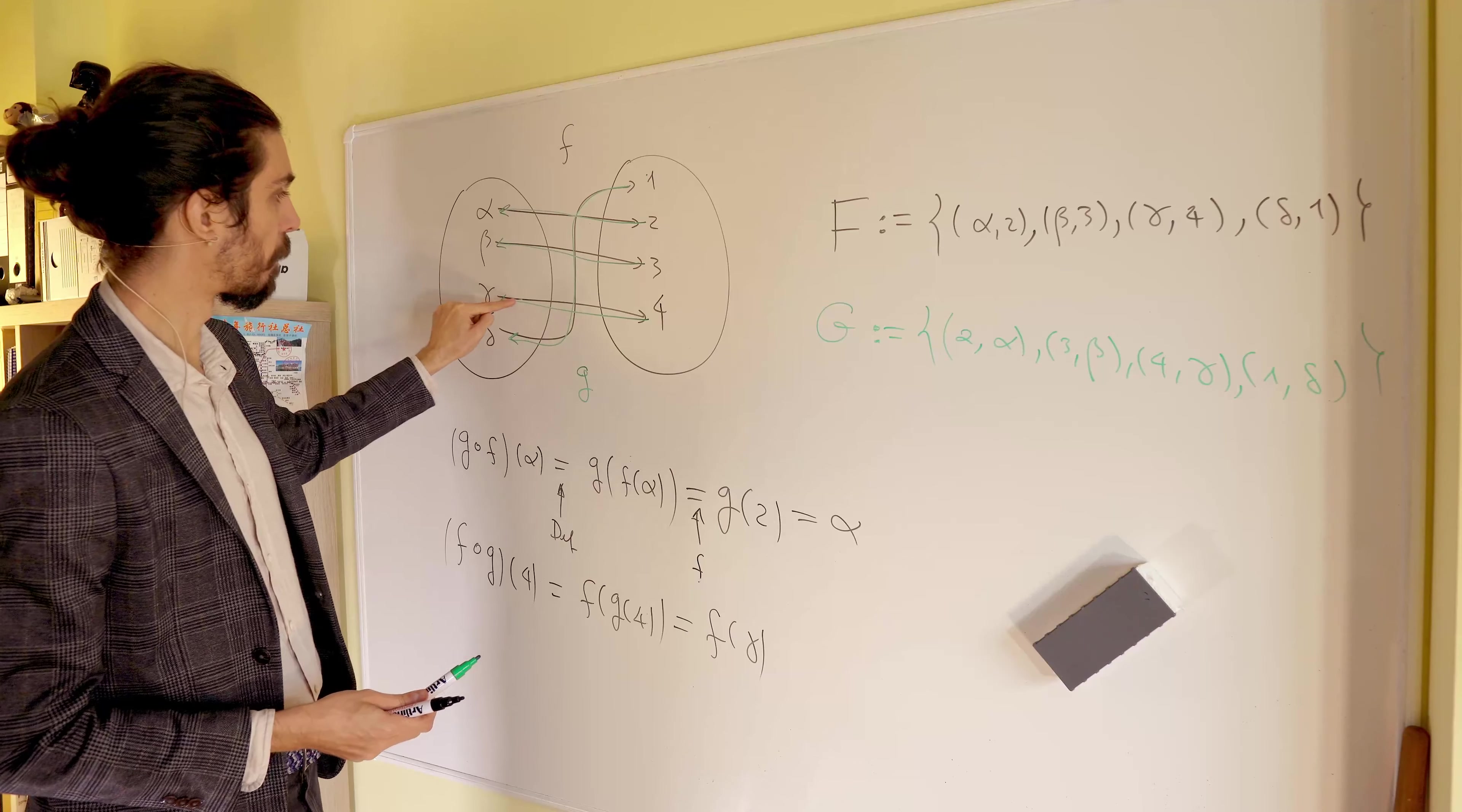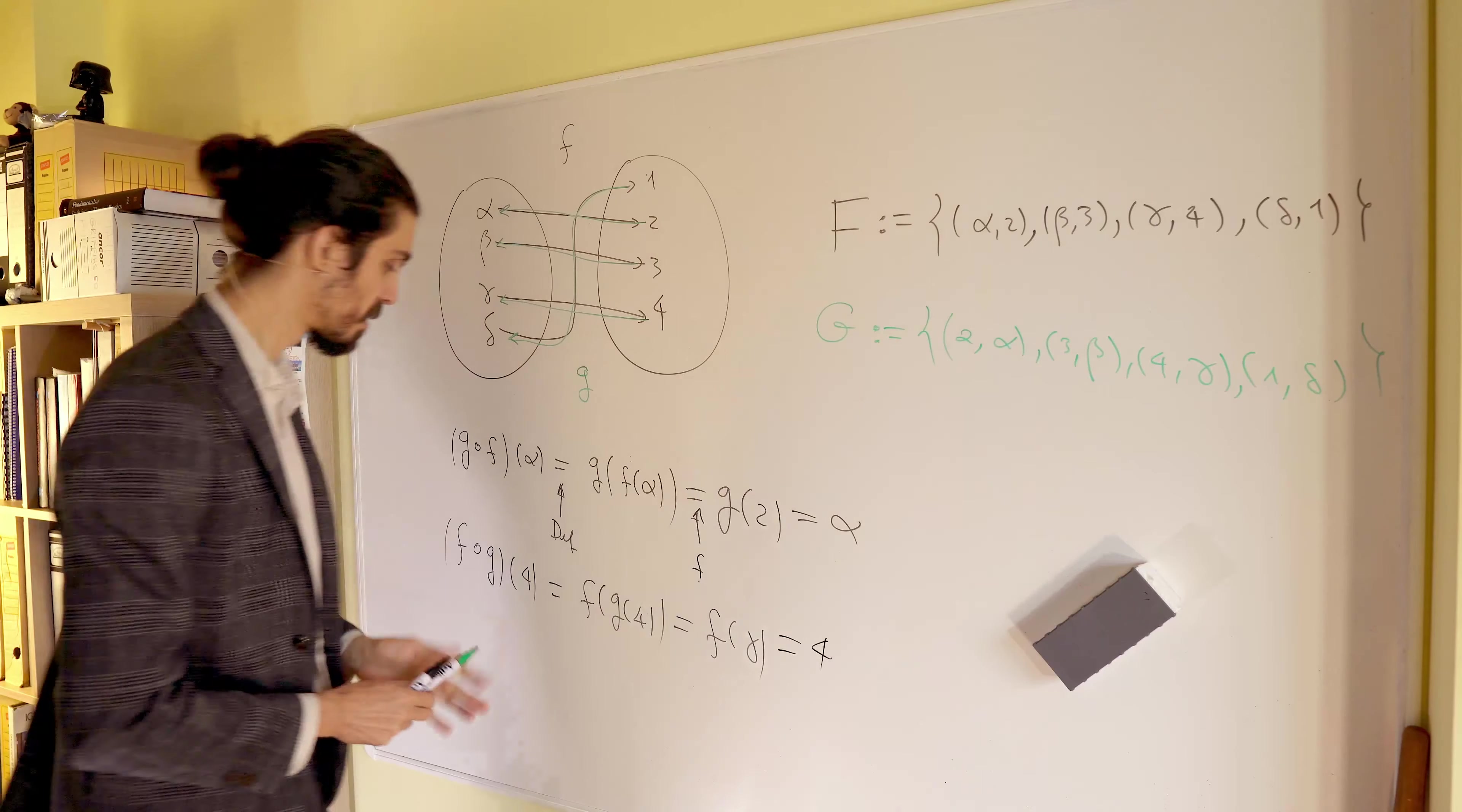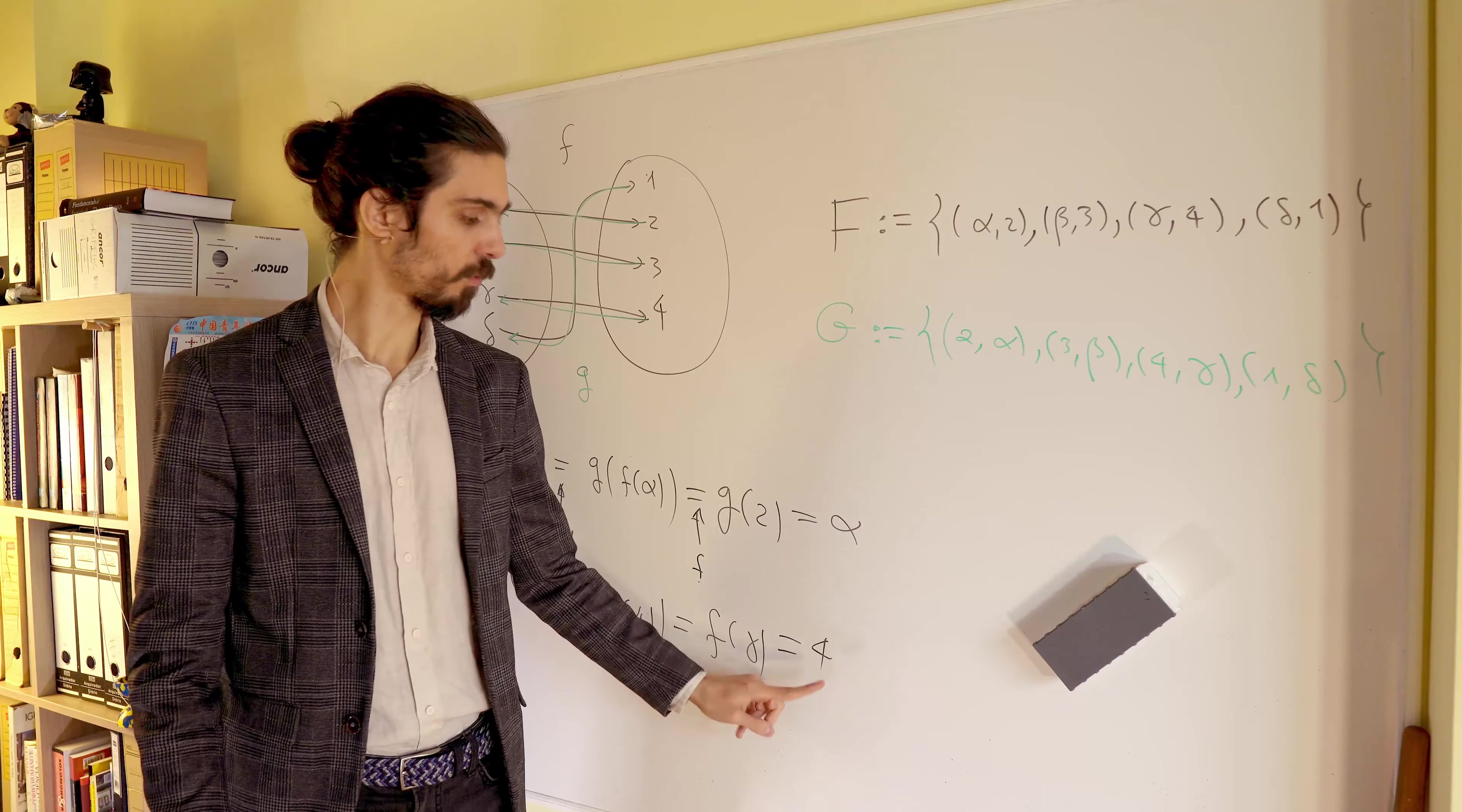Okay? So this is gamma. And the black arrow is assigned to 4. So you see, again, the input 4 to the composite, and you get 4 again.